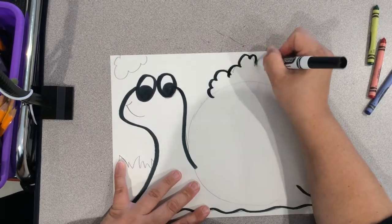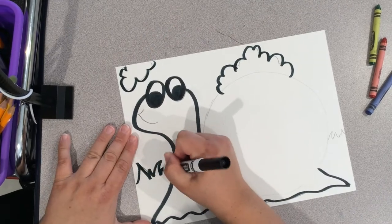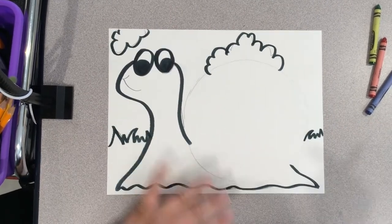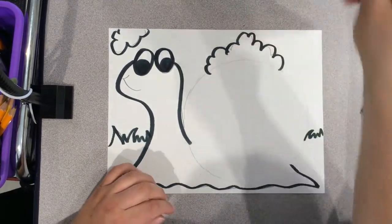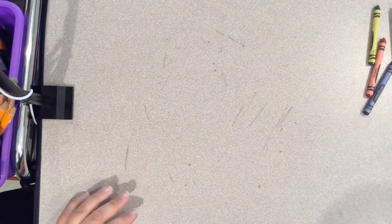Now, if you notice, I go down past the line of where my color wheel goes. That's so if I happen to scoot my color wheel one way or the other, no white spaces will show. Then you can go ahead and color.